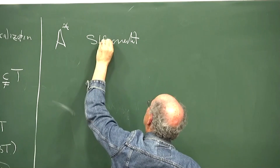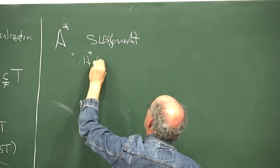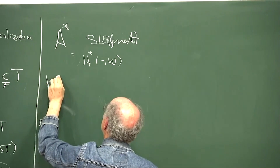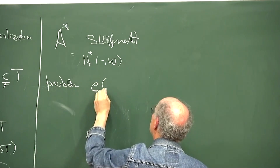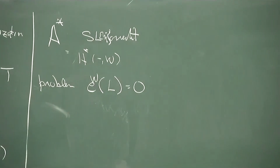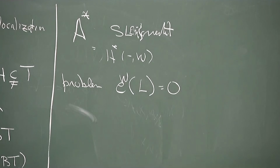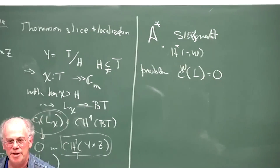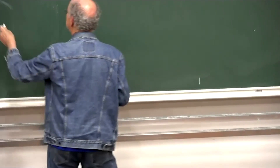But the argument has a problem for an arbitrary SL-oriented theory. Let's look at the purely quadratic story: take A^* = H^*(W), the Witt sheaf cohomology. The problem is that the first Chern class of a line bundle becomes the Euler class of a line bundle, and this is 0. In fact, if you take the Euler class in this theory for any odd-rank bundle, you get 0.